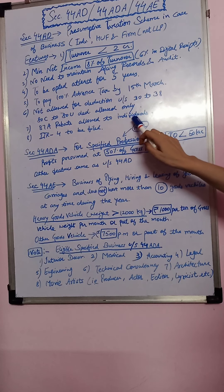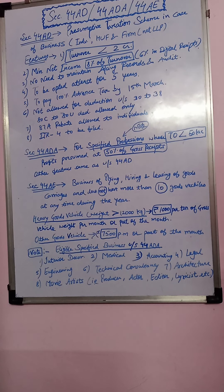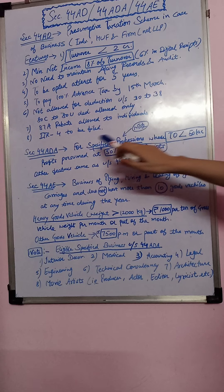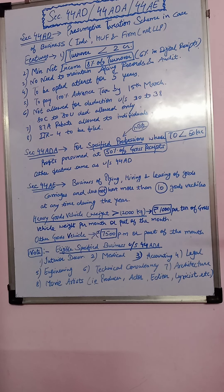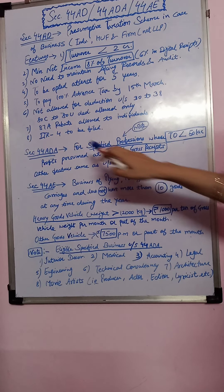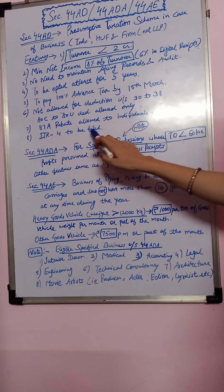Next, 87A rebate allowed to individuals. You can take 87A rebate also, but this will be available only to individuals. Next, ITR 4 to be filed.